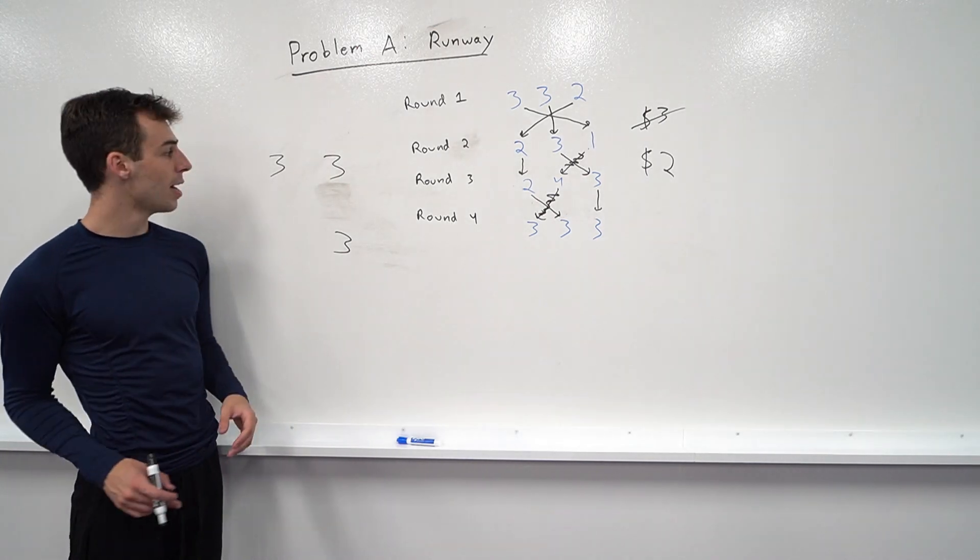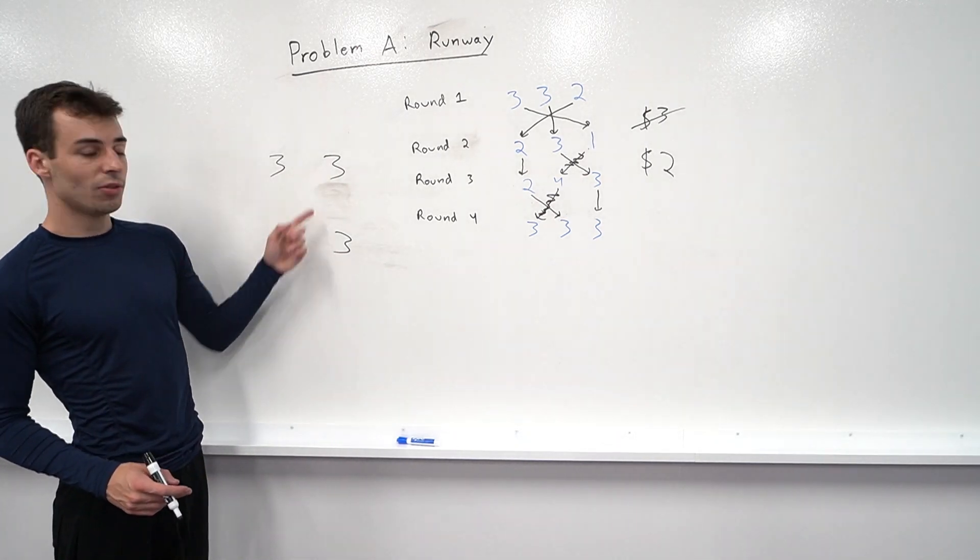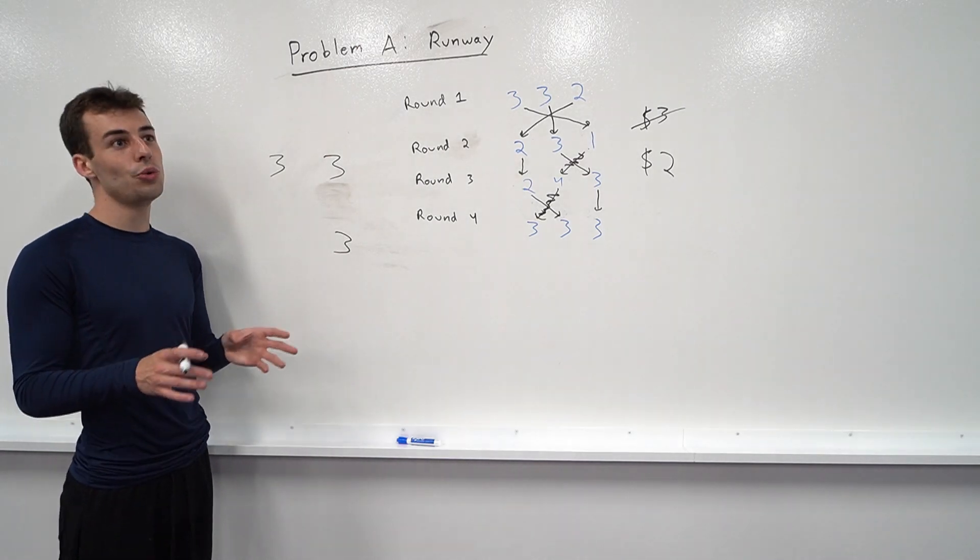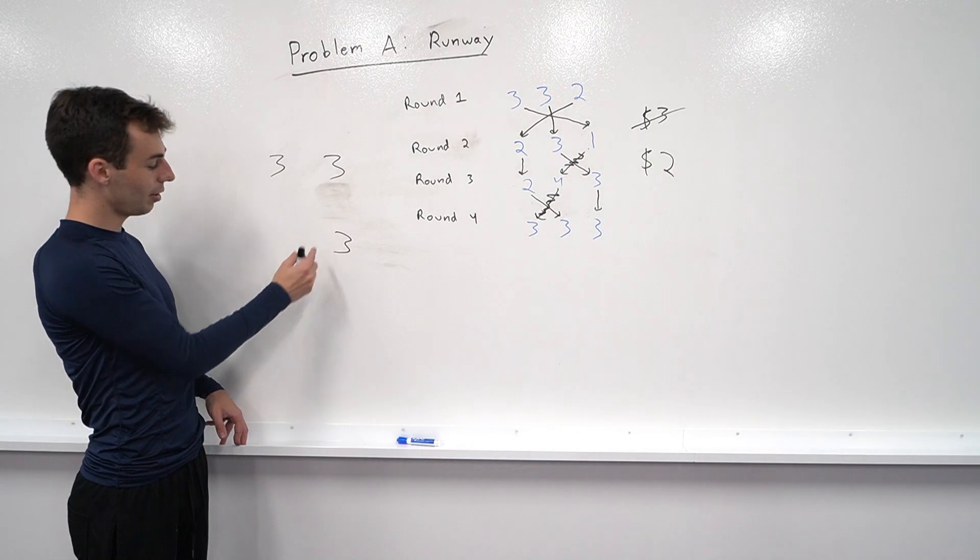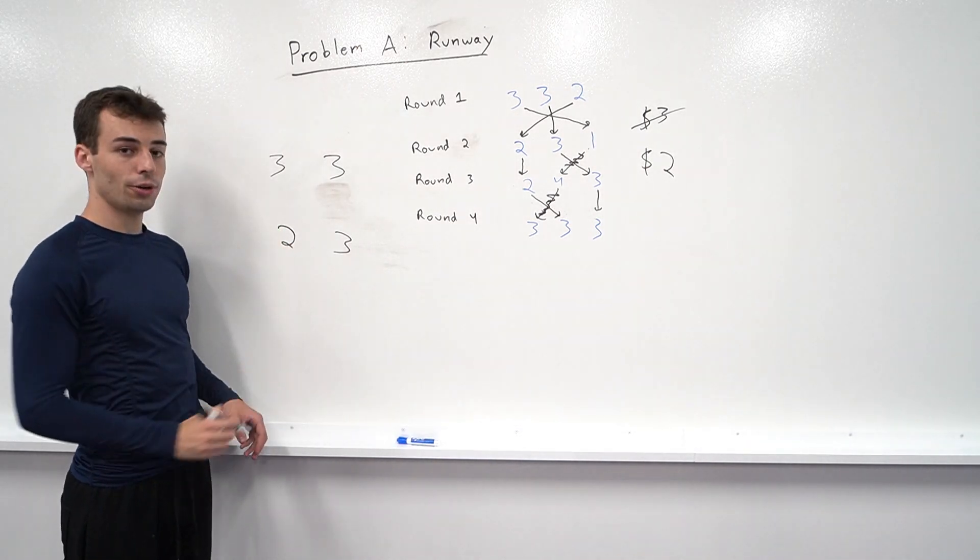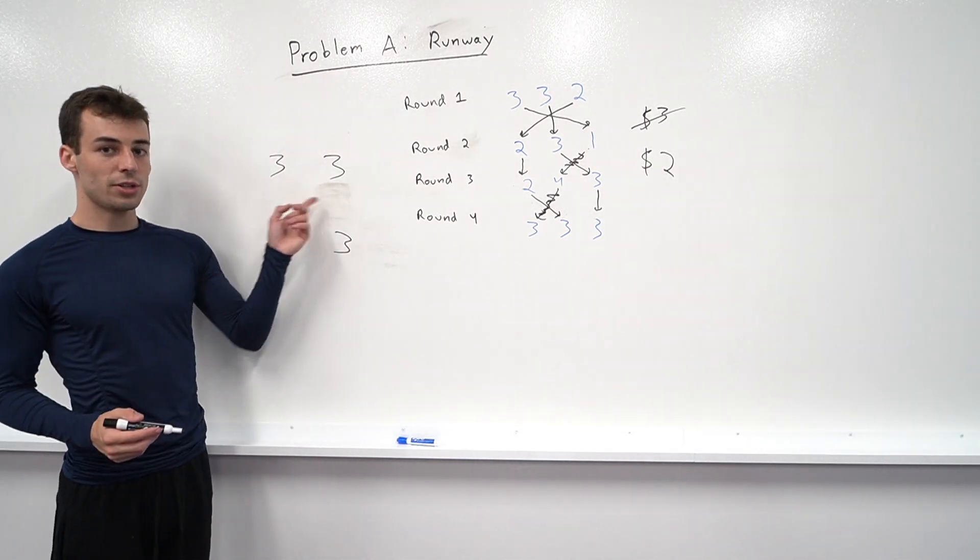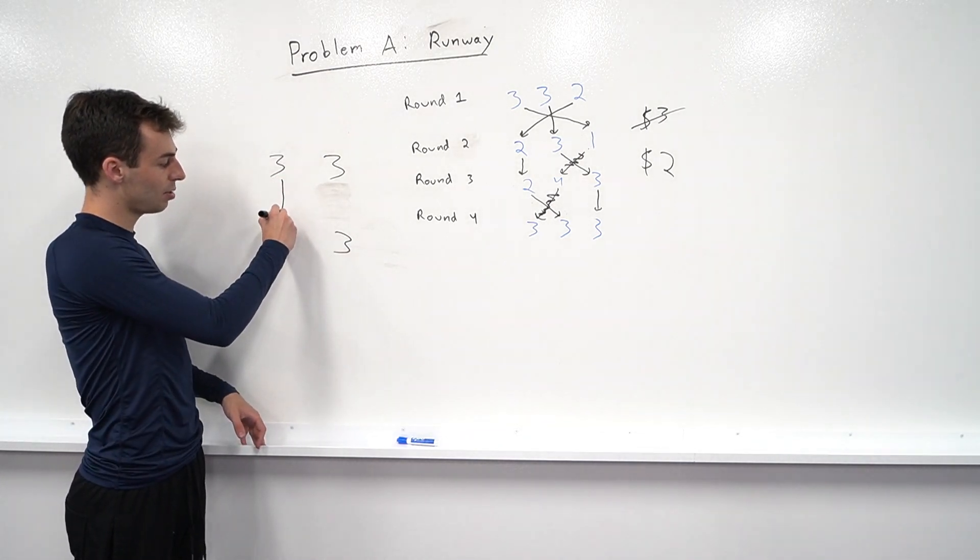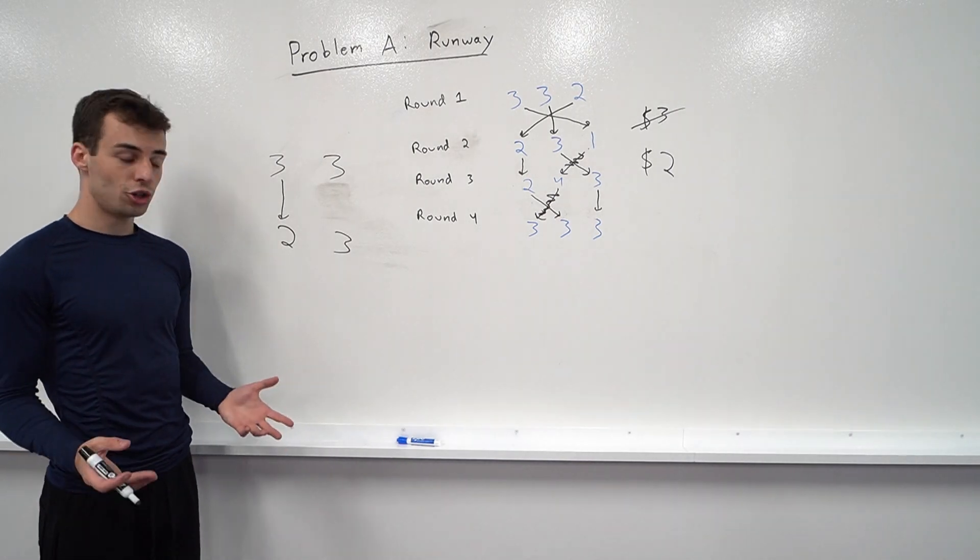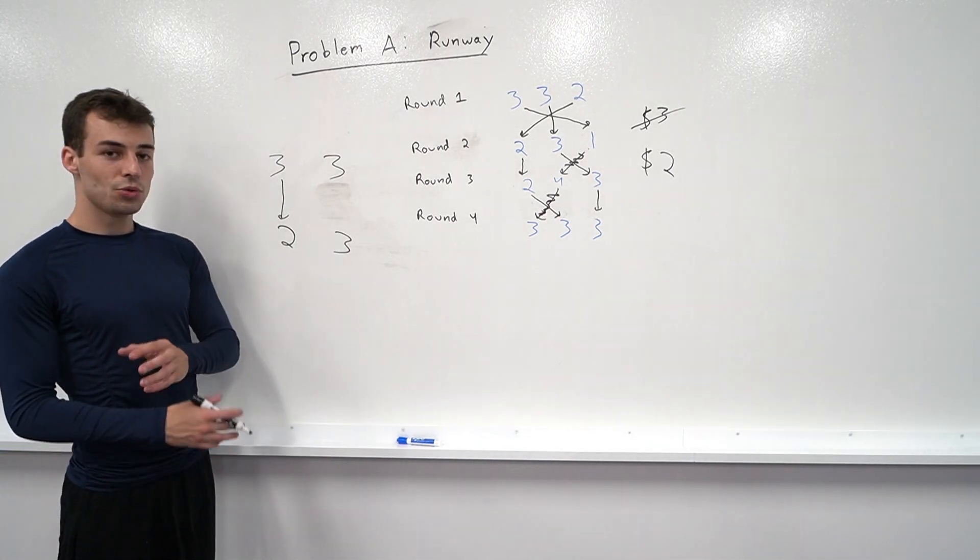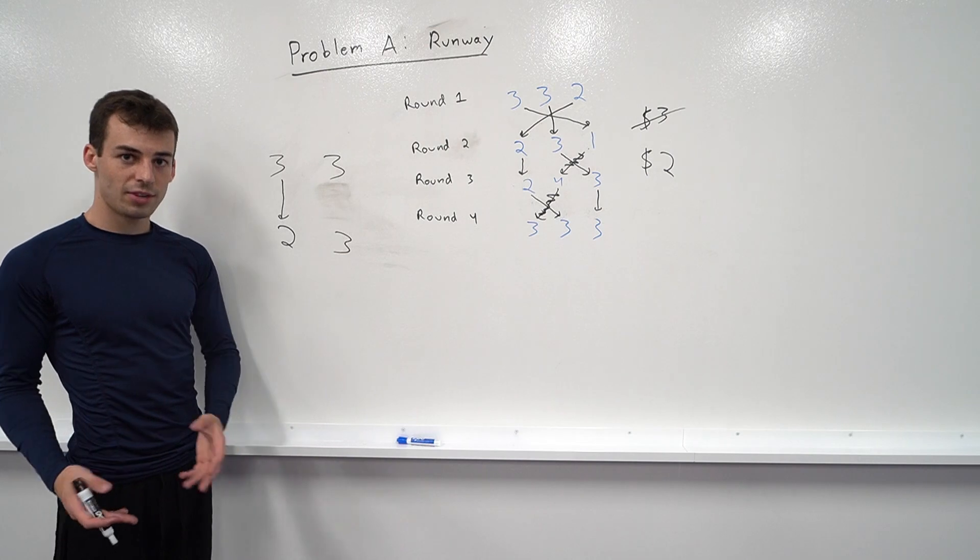And it turns out the only thing that matters in this case is we want to come from a three who has used the quick change, because one of these threes if it's not going to go to a three maybe it has to go to a two over here. If we have a three who has a free change left we might as well expend that change on this two because we know we have to use one change here.